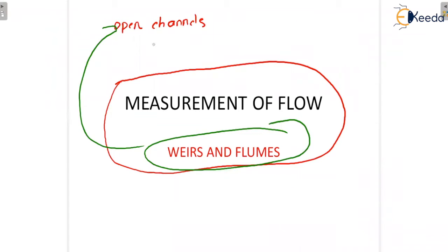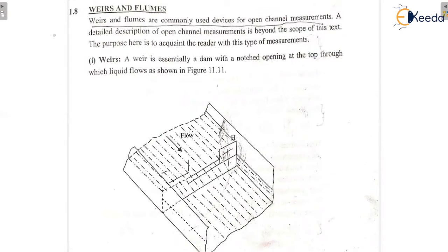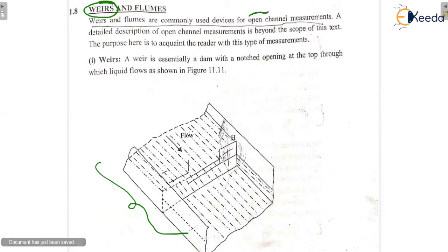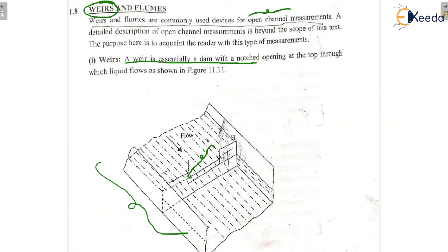Weirs and flumes are commonly used devices for open channel measurements. First we are going to study weirs. A weir (W-E-I-R-S) — this is the physical structure of a weir. The purpose of weirs and flumes is for the long distance measurement of liquid flow. A weir is essentially a dam with a notch opening at the top through which the liquid flows.